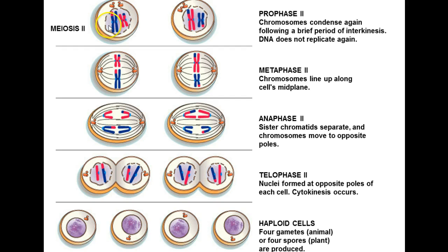Then we move into metaphase 2 — this is happening in both cells at the same time. The double-stranded chromosomes line up individually around the equator of each cell. In anaphase 2, the centromere splits and the sister chromatids are pulled towards opposite ends of the cell. In telophase 2, the sister chromatids reach opposite ends, begin to uncoil back towards chromatin, new nuclear envelopes form, and cytokinesis occurs. The end result is 4 haploid daughter cells.